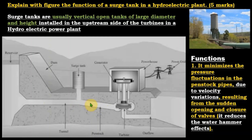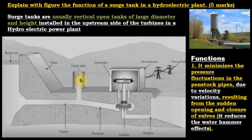Sudden closure causes decelerating flow, and sudden opening causes accelerating flow. In the case of velocity variations, we have pressure pulses or pressure waves. To avoid these, we install a special storage reservoir called the surge tank.